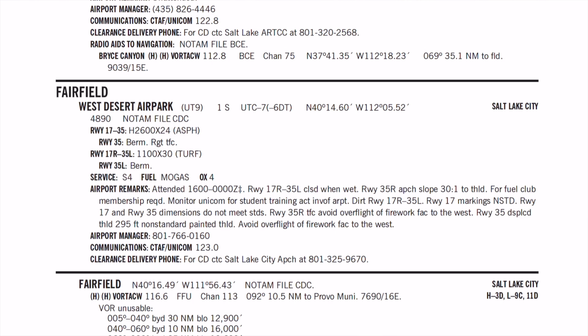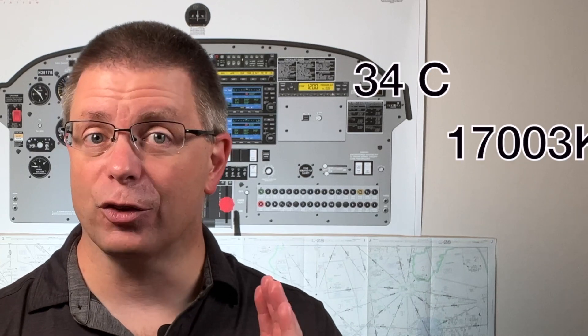As you look at the airport information, you learn West Desert Air Park sits at 4,890 feet MSL and has a 2,600-foot paved runway. Based on previous work, you know the airplane and passengers weigh 2,460 pounds. Current weather shows the temperature is 34 degrees Celsius, winds are 3 knots right down the runway, and the altimeter setting is 30.05.